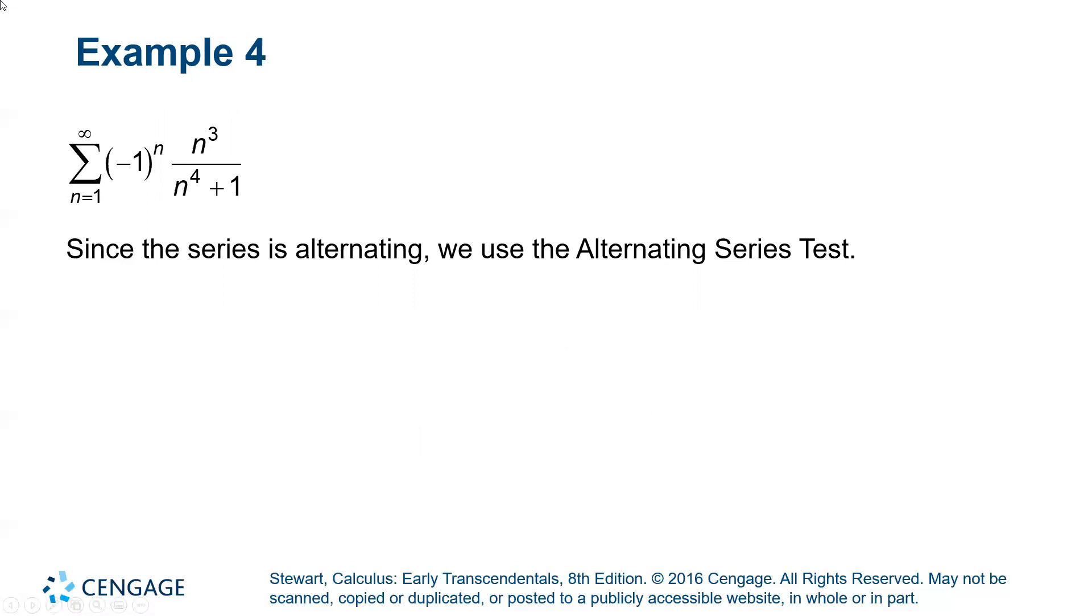This series is alternating because it's negative one to the n, so right off the bat those are a pretty quick hit, you want to use the alternating series test to check the limit of the absolute value.